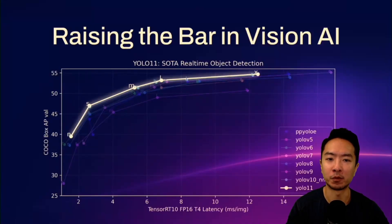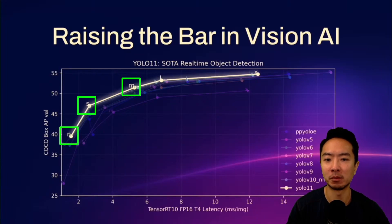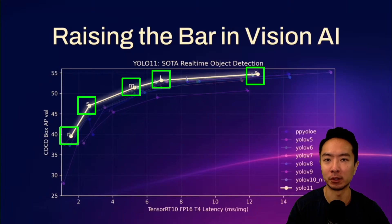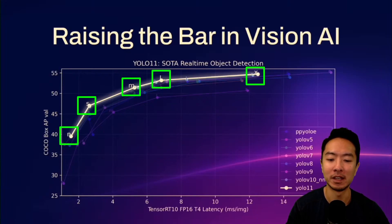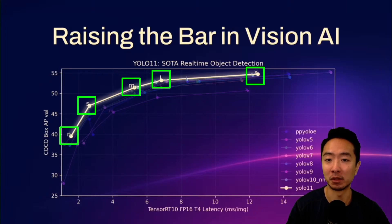Here we take a look at the performance of YOLO 11 for the different model sizes. As before, we have nano, small, medium, large, and extra large, and you can see that this curve is above all the other YOLO models — versions 5, 6, 7, 8, 9, and 10. It's much better in terms of performance, getting faster and faster. This is running on TensorRT10 for reference.